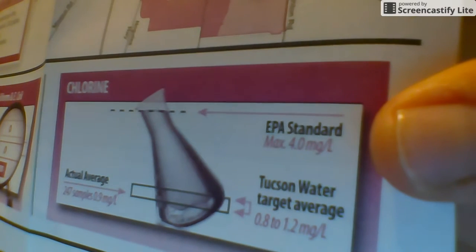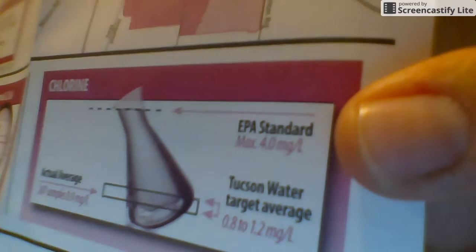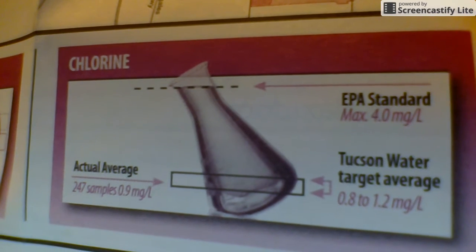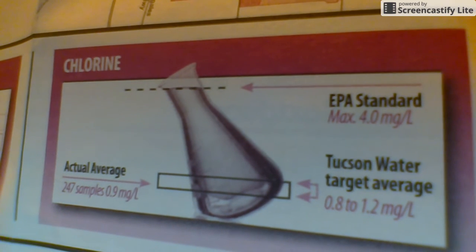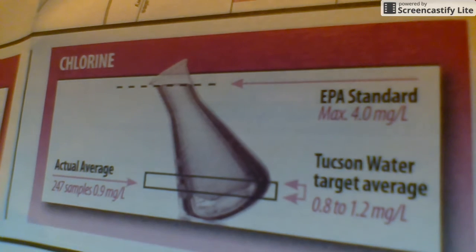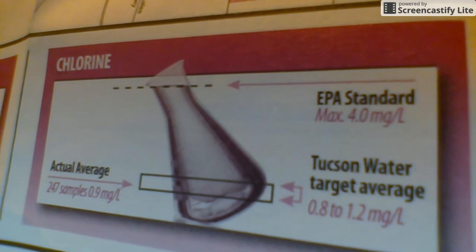Since you guys are going to be experts on scale models, inside the pamphlet is a bunch of information. Right here is a diagram of the amount of chlorine in Tucson water. It says that the EPA standard is 4.0 milligrams per liter for chlorine, and that the Tucson water target average is 0.9 to 1.2 milligrams per liter.